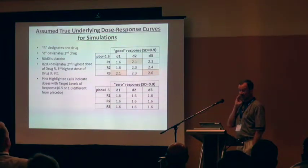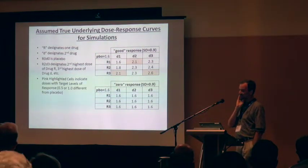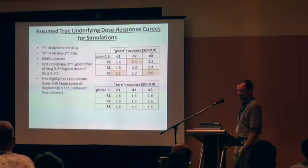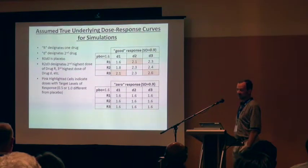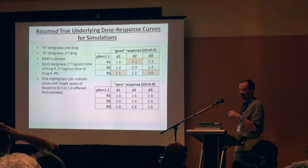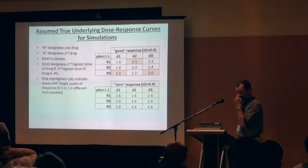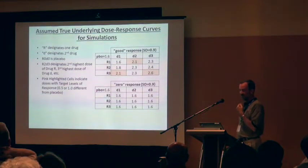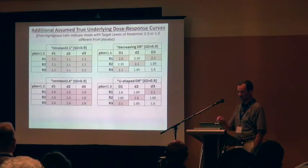The true underlying scenarios used had D1, D2, D3 as increasing doses of one component and R1, R2, R3 as increasing doses of the other component. The standard deviation was 0.9, placebo had a response of 1.6, and there was an example with two combinations at the lower target level of response of 0.5 — those are the 2.1s — and one dose combination at the upper target level, one unit better than placebo. Then there was also the null dose-response curve.